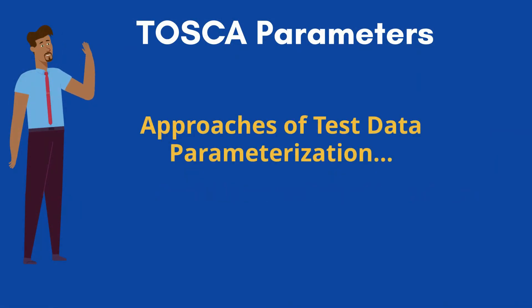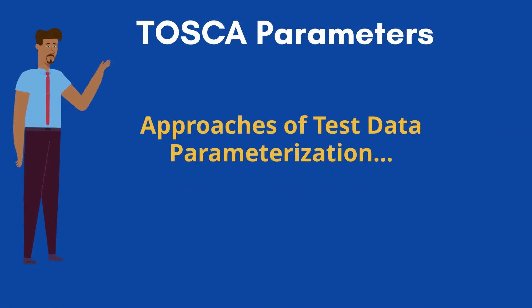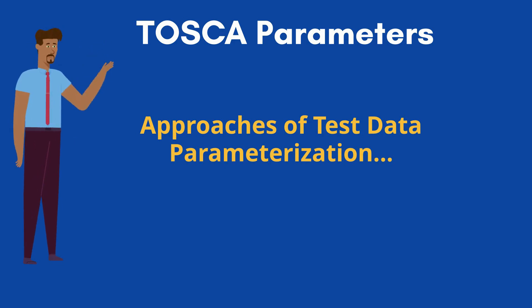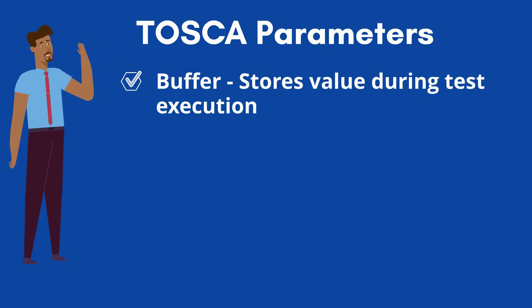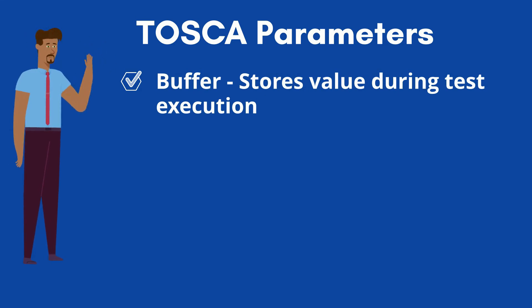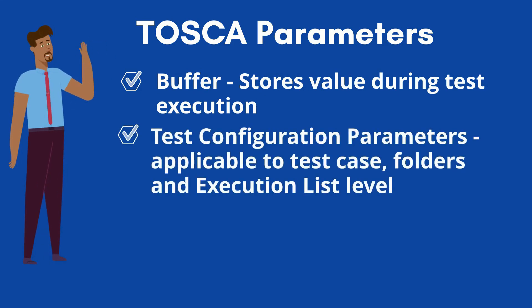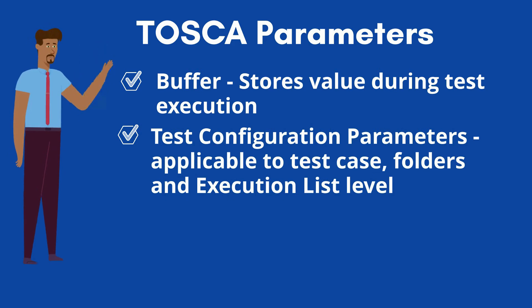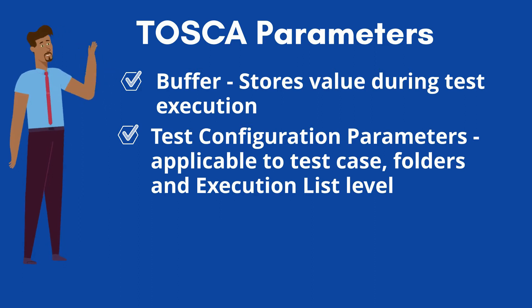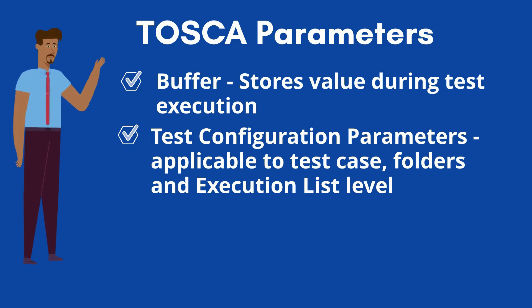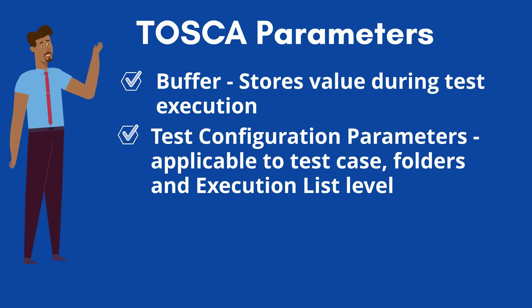Tosca allows different approaches to perform parameterization. The basic approaches are: Buffer, which is similar to variables and holds values during the execution; and Test Configuration Parameters, which is another way to parameterize the test data. The test configuration parameters can be created at test case, folder, or execution list level.